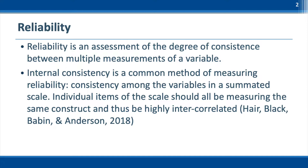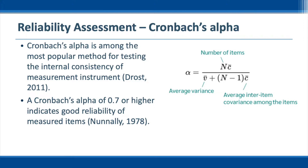First, let's talk about reliability. Reliability is an assessment of the degree of consistency between multiple measurements of a variable. Internal consistency is the common method of measuring reliability. It represents the consistency among variables in a summated scale. Individual items of the scale should all be measuring the same construct and be highly inter-correlated. Cronbach's alpha is one of the most popular methods for testing internal consistency of a measurement instrument. A Cronbach's alpha of 0.7 or higher indicates good reliability.